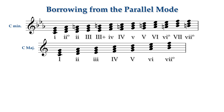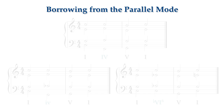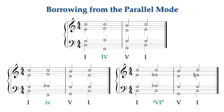The chords of parallel keys may be substituted by function. This is called mode borrowing. It is a very simple way of introducing chromaticism. For example, if I am in a major key, I may choose to use a minor 4 chord or a major 6 chord built on the parallel minor, since these chords exist in the parallel minor key.